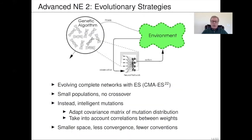Another advanced technique is CMA-ES — Covariance Matrix Adaptation Evolution Strategy — a very good approach for continuous optimization that can be applied to optimizing continuous-valued weights. This is quite different from the previous approach: there are small populations, no crossover, but instead intelligent mutations. CMA-ES is well suited for neuro-evolution because it captures interactions between weights via the covariance matrix, giving a good idea of what works. It gives you a smaller search space, less convergence issues, and fewer competing conventions. It's a quite powerful approach for directly optimizing weights of neural networks.